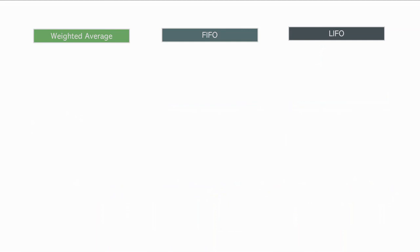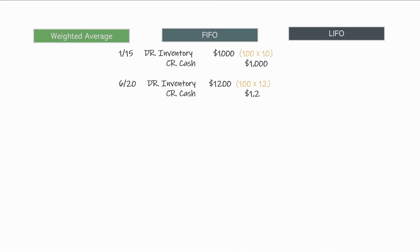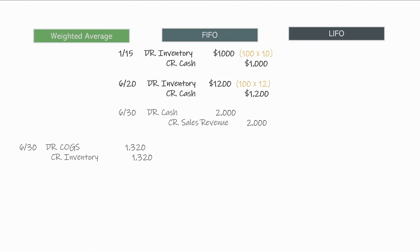One more thing to look at is journal entries in this example. No matter what method you're using, the purchase of inventory is the same journal entry under all three methods. On January 15th, debit inventory $1,000 and credit cash. On June 20th, debit inventory $1,200 and credit cash — so the balance sheet shows the $2,200 total. Then on June 30th, we sell 120 shirts for $2,000 of revenue — the same under all three methods. The only difference is the final journal entry for cost of goods sold: $1,320 for weighted average, $1,240 for FIFO, and $1,400 for LIFO.